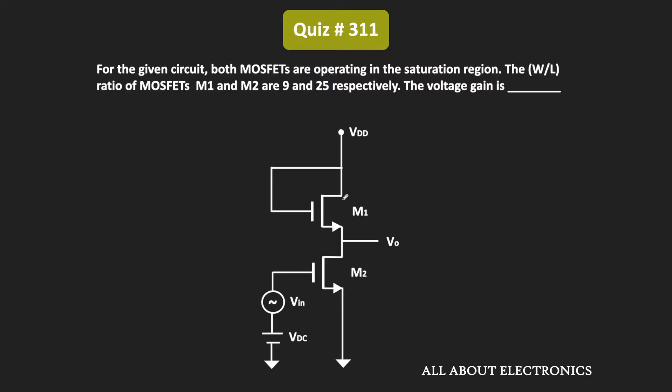Hey friends, welcome to the YouTube channel All About Electronics. In this question, we have been given an amplifier circuit where the two MOSFETs are operating in the saturation region. We have also been given the W by L ratio of the two MOSFETs, and we have been asked to find the voltage gain.